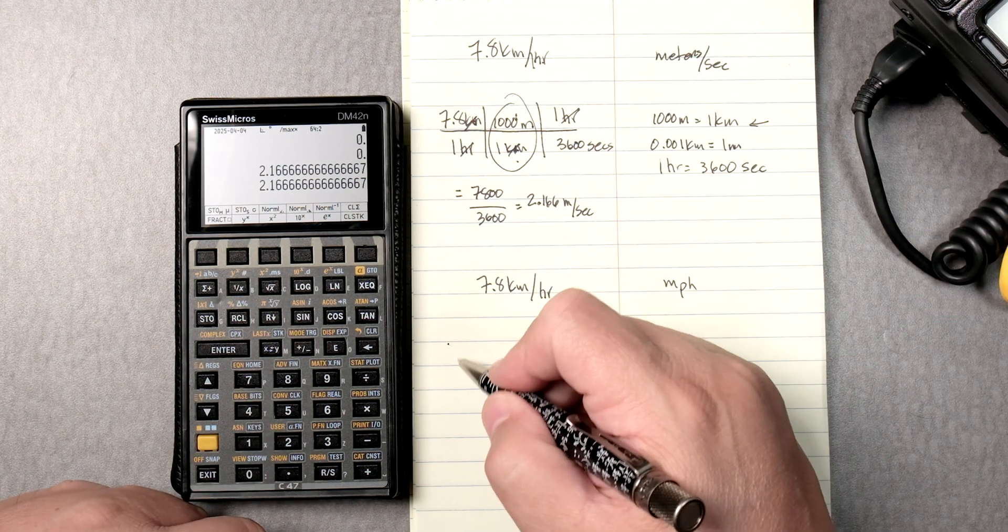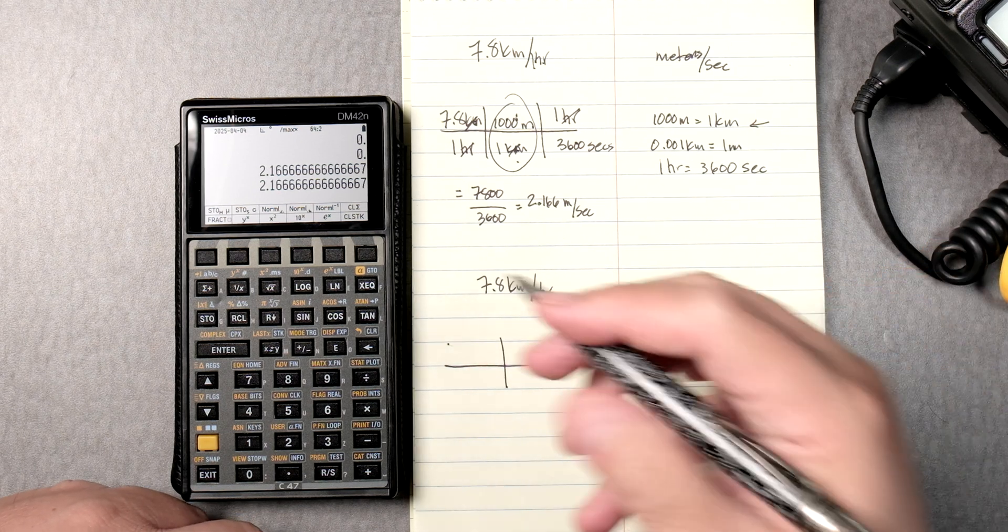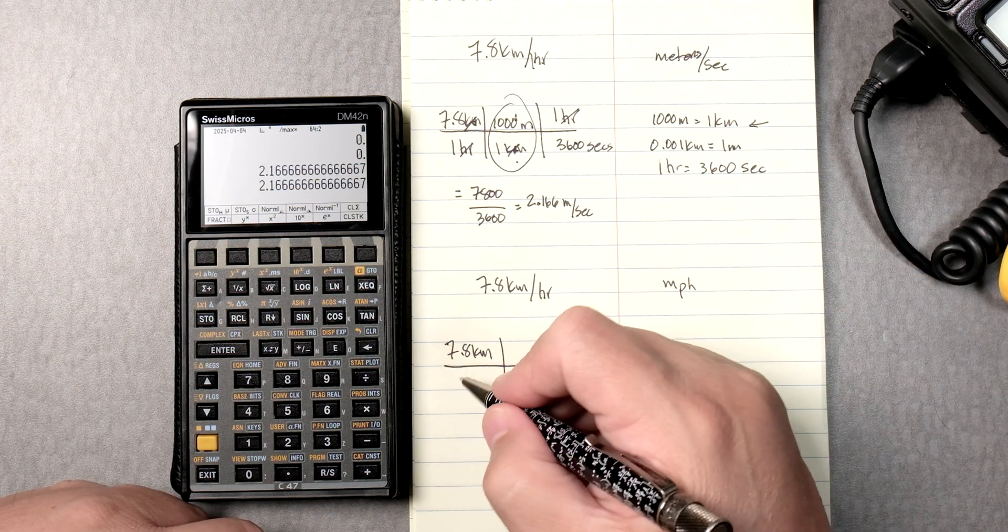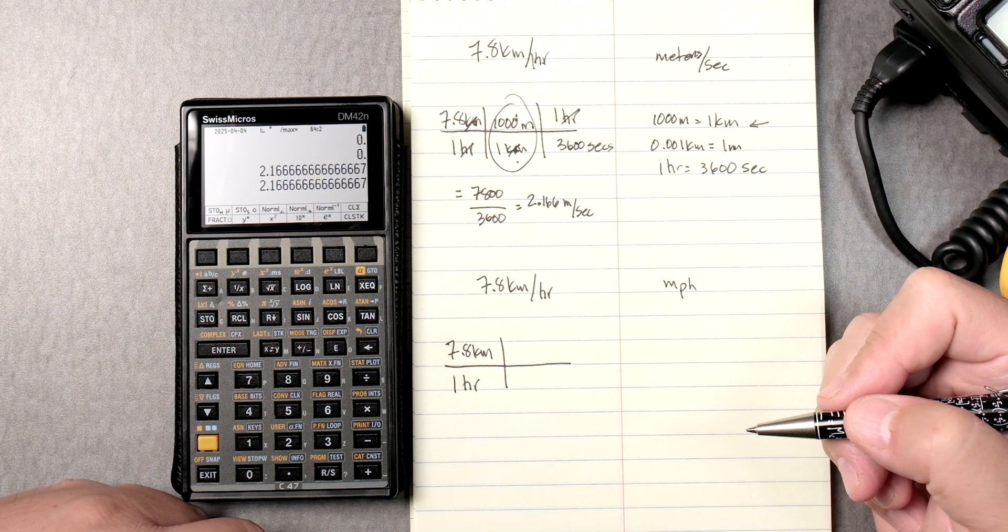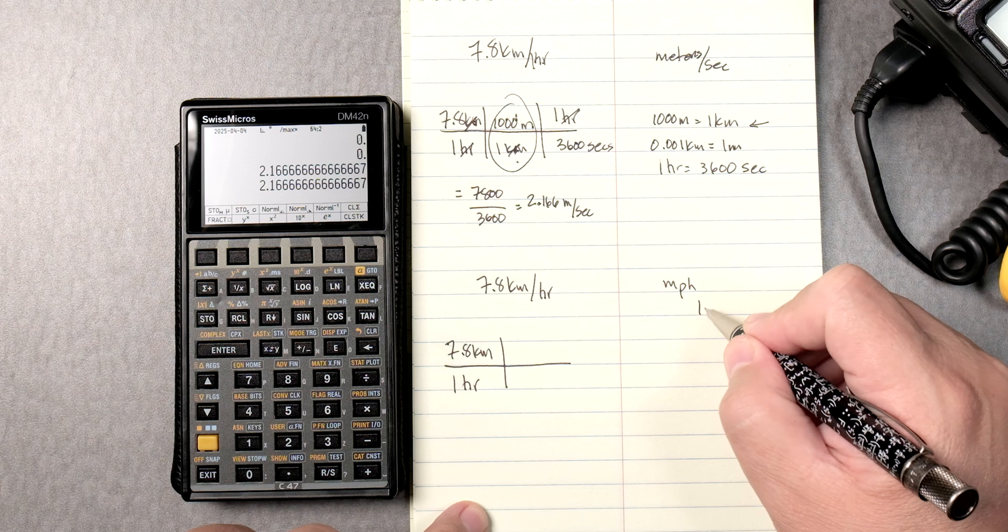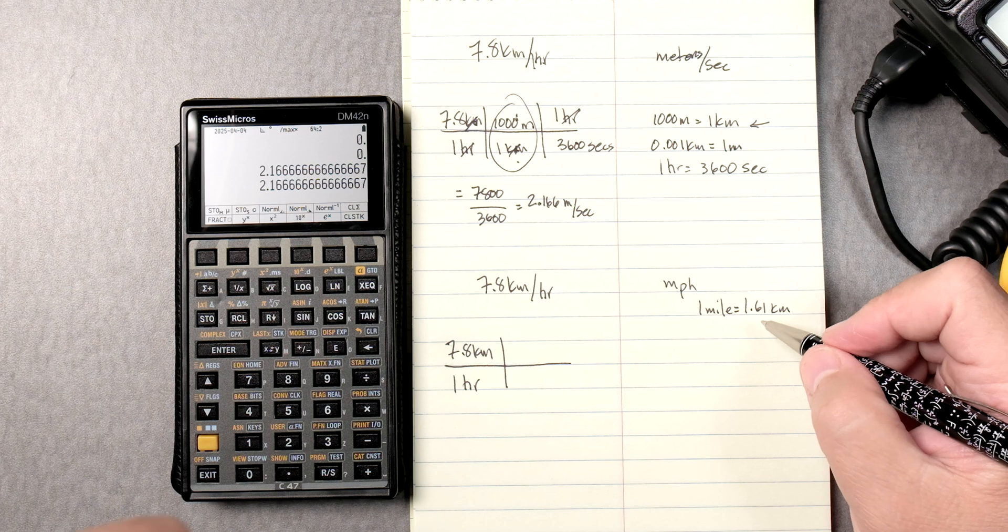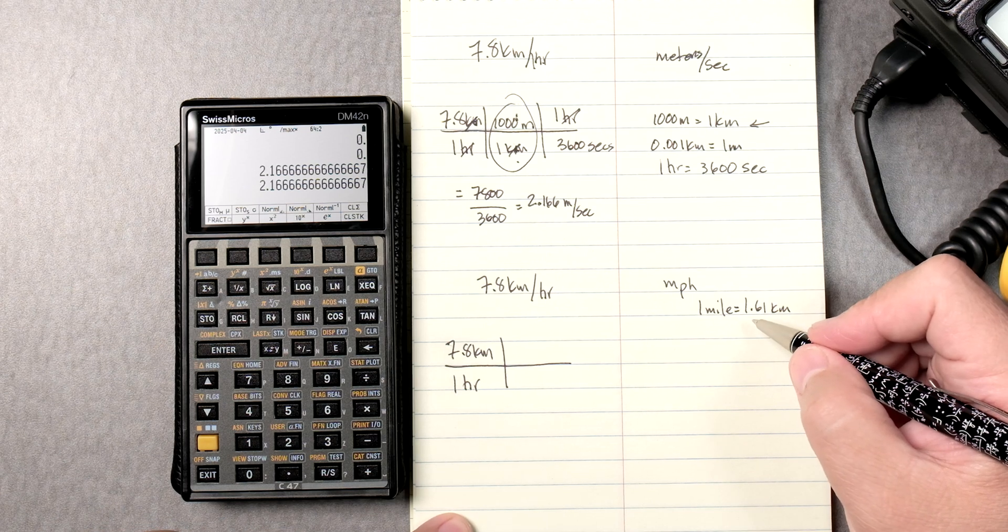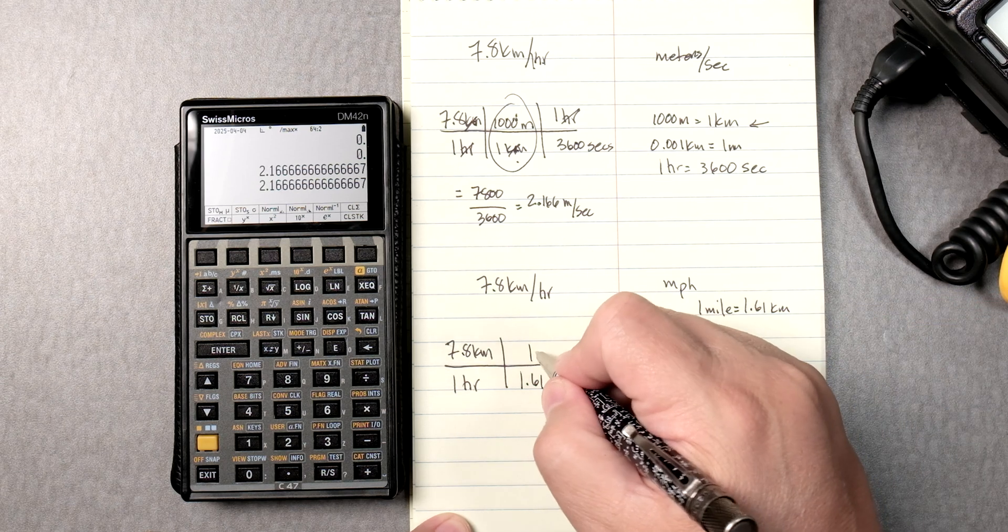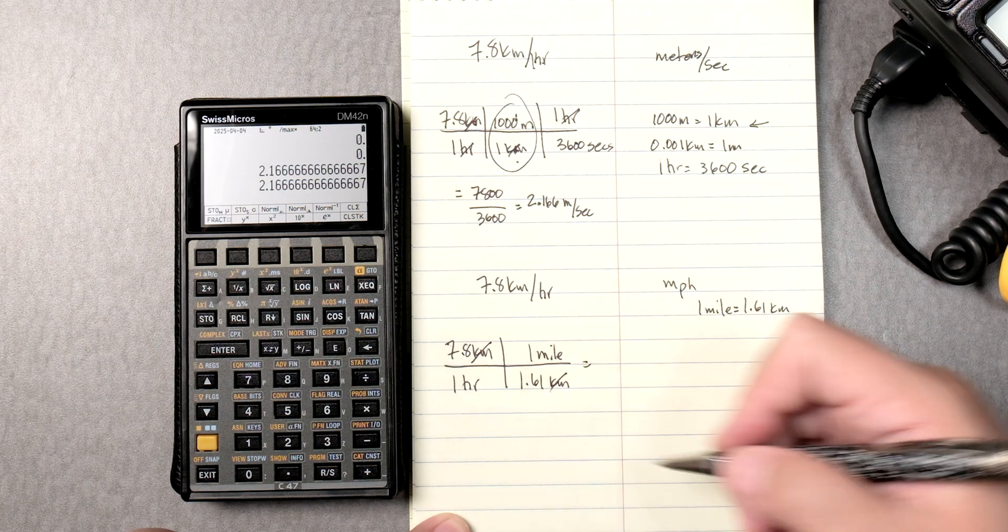So, let's do a table again. 7.8 kilometers for every hour. You can think of it as every one hour. And here, a lot of times one mile is equal to 1.6 kilometers. That is in the table where you need to memorize or they give it to you. So, 1.61 kilometers in one mile. You can see kilometers cross out and you get miles per hour.